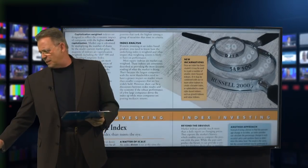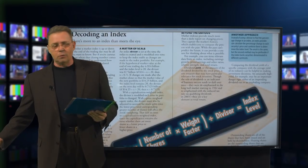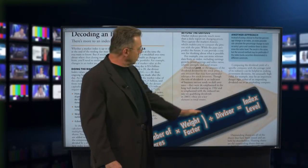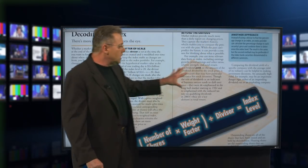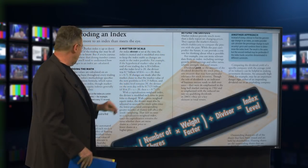When decoding, sometimes people say they have a hard time decoding all this — and I agree. That's why I still think you need a registered investment advisor. Another approach, instead of using a divisor, is to find the percentage change in an index: an index provider can calculate the percentage change in each security's price and combine them to determine an index level. The second method is preferred for indexes that have different currencies involved.